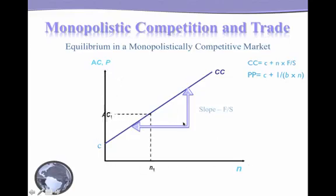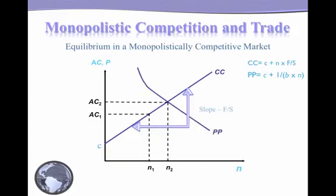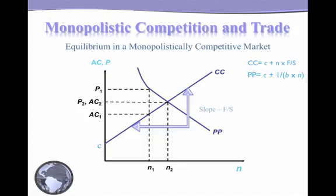The PP function shows a positive relationship between price and n — price is on the y-axis and n on the x-axis, and the PP function has a positive slope. Superimposing it on the graph: if you have n1 number of firms the price charged is p1, and as the number of firms increases prices fall due to increased competition. The CC function tells us: when the number of firms was n1 the average cost was AC1; when it increased to n2 the average cost rose to AC2. This increase in average cost as firms increase shows the loss of economies of scale. The equilibrium is at point E where you have n2 number of firms and the equilibrium price and average cost is P2 and AC2.